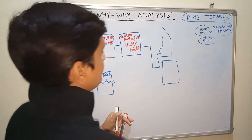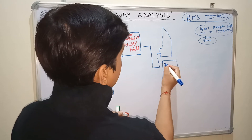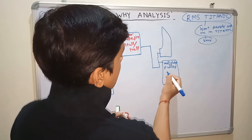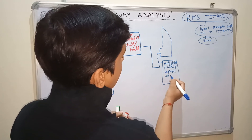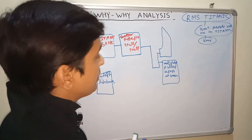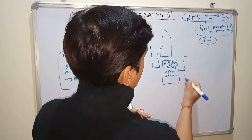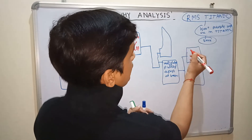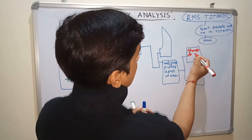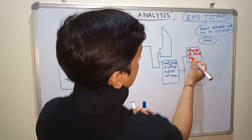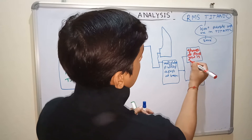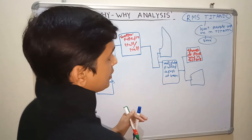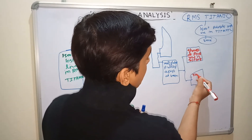First answer: the hull plate pulled apart at the seam. Then I ask — why did the hull plate pull apart at the seam? I get two answers. First: the rivet strength of the rivet joint was not good. Second answer for why the hull plate pulled apart at the seam: the ship hit an iceberg.